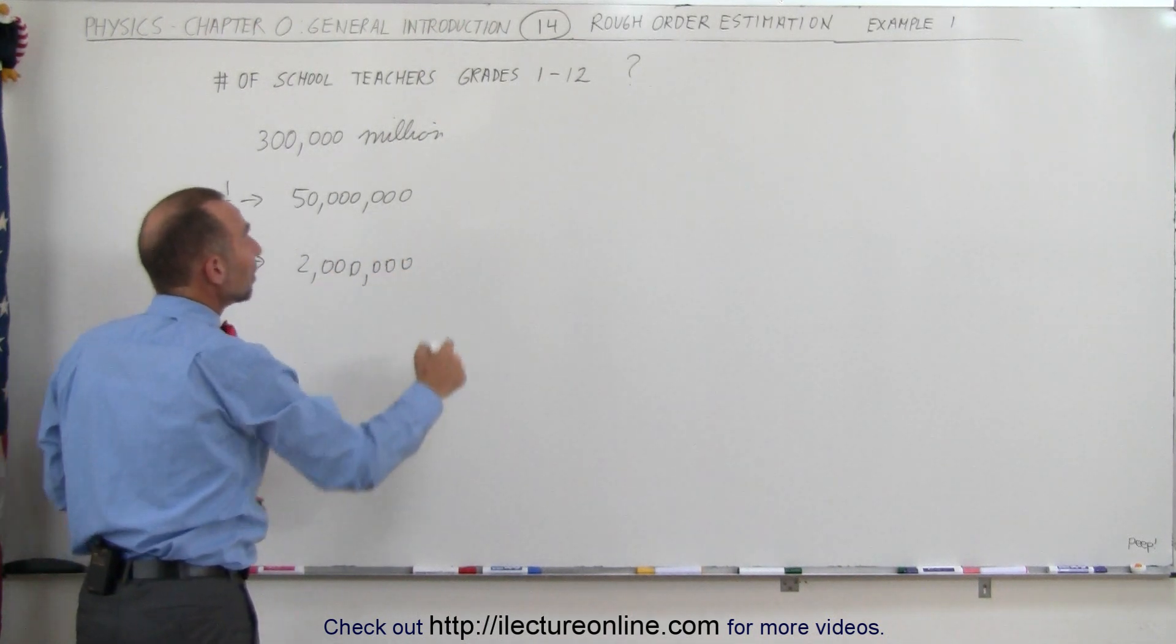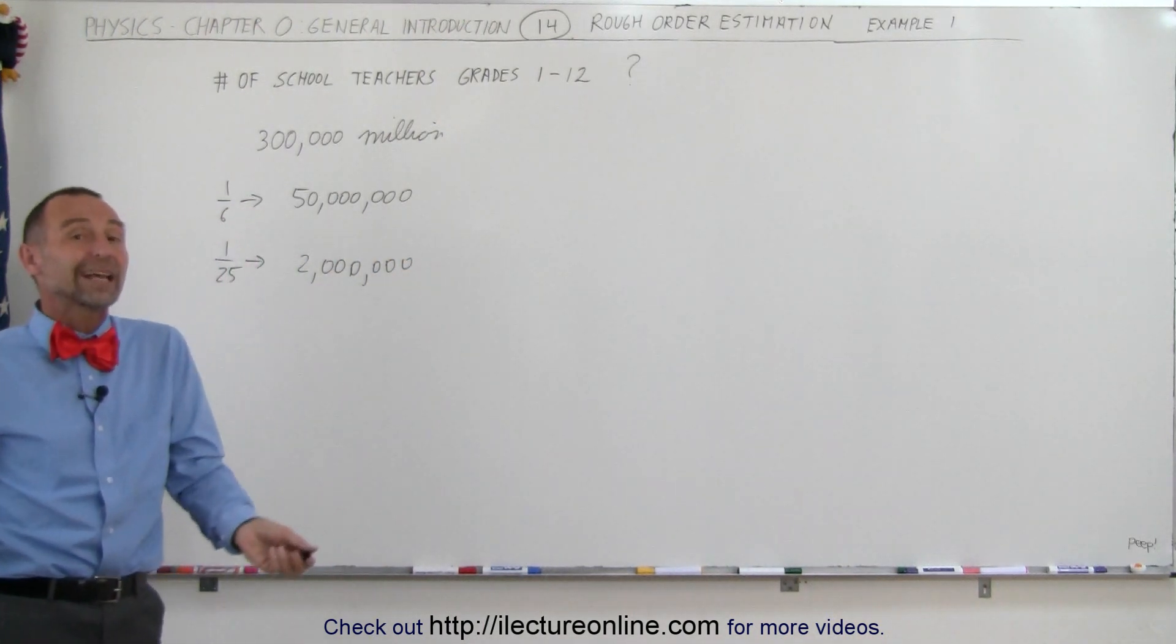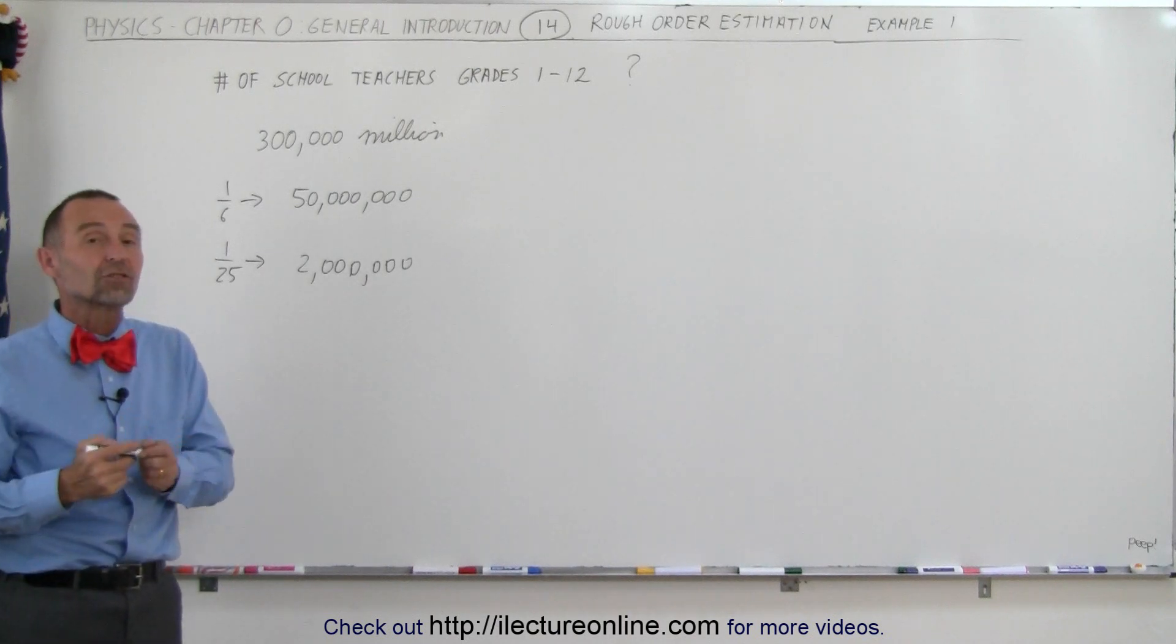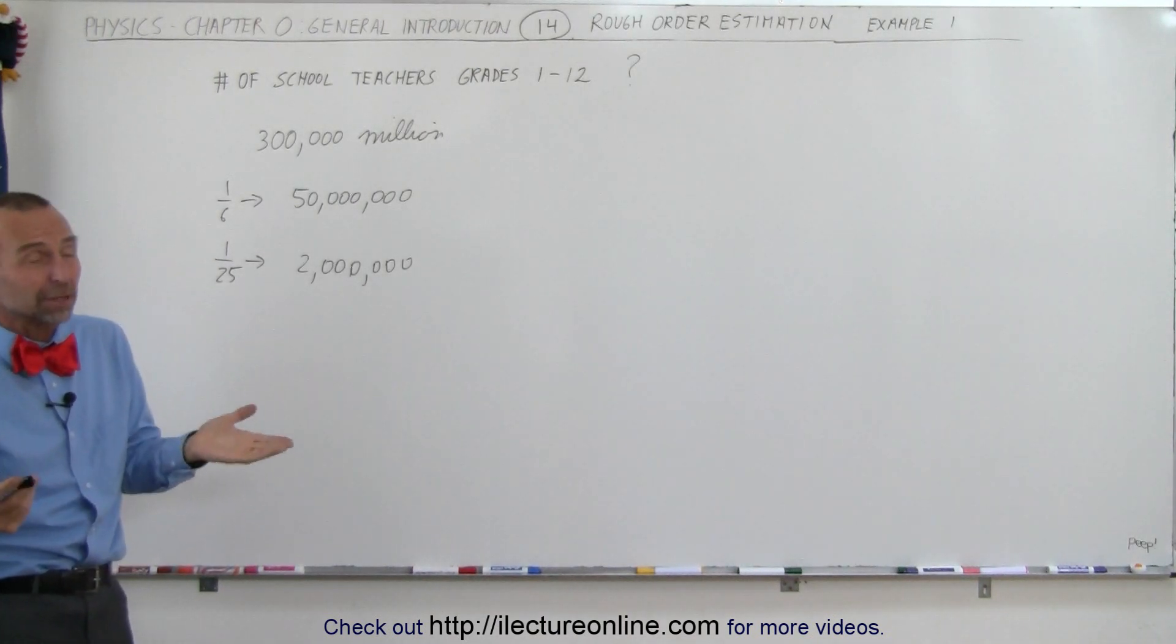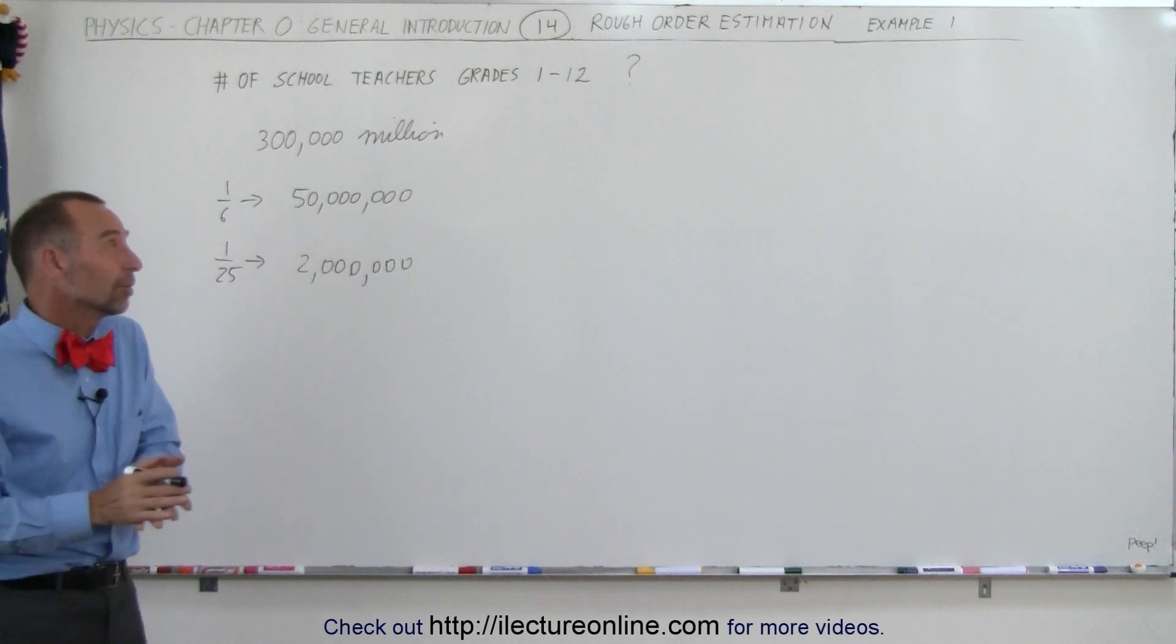So in other words, 2 million is a really good rough order estimate as to the number of teachers in the classroom. Now, we could be off, it could be 1 million, it could be 3 million, but 2 million is fairly close to the estimate.